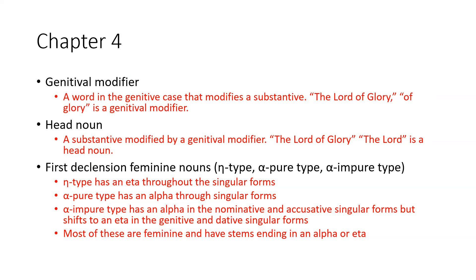First declension feminine nouns include: the eta type, which has an eta throughout the singular forms; the alpha pure type, which has an alpha through the singular forms; and the alpha impure type, which has an alpha in the nominative and accusative singular but shifts to an eta in the genitive and dative singular — hence 'impure' because it mixes them. Most of these nouns are feminine with stems ending in alpha or eta, and once you memorize the paradigms the chart should make total sense.